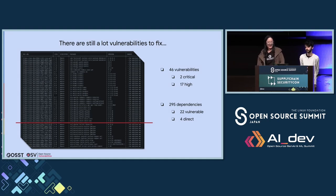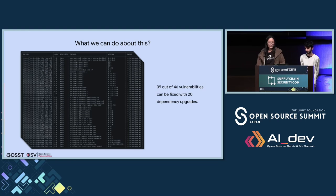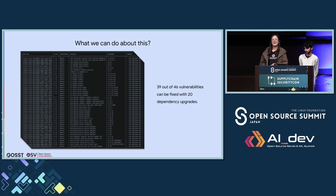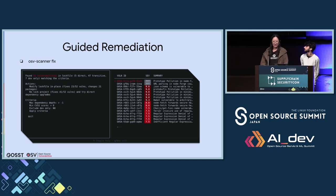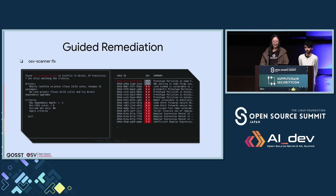You can imagine how helpful it would be to have a tool that provides insights on vulnerability fixes as well as detailed remediation steps. Our solution, using the same Maven POM example, is able to tell you that 39 out of 46 vulnerabilities can be fixed by updating just 20 dependencies. With these insights, people no longer need to fix vulnerabilities one by one or switch between different services. All you need to do is run OSV Scanner. This feature is called guided remediation, also known as osv-scanner fix, which aims to help developers fix a high number of vulnerabilities in dependencies by providing a small number of actionable steps.